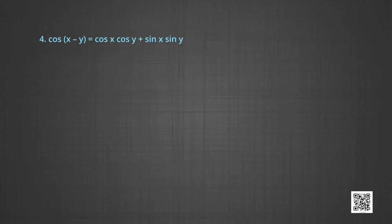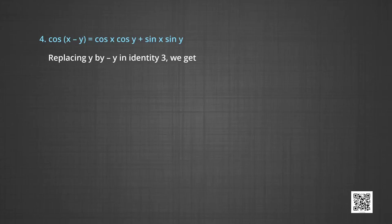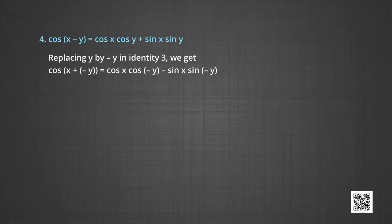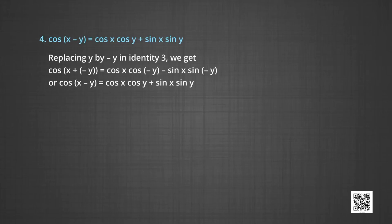Now we will see how to get the formula for cos(x-y). In the identity we proved, we replace y by -y. On replacing y by -y, we get cos(x + (-y)) = cos x cos(-y) - sin x sin(-y). Applying cos(-y) = cos y and sin(-y) = -sin y, we get cos(x-y) = cos x cos y + sin x sin y.